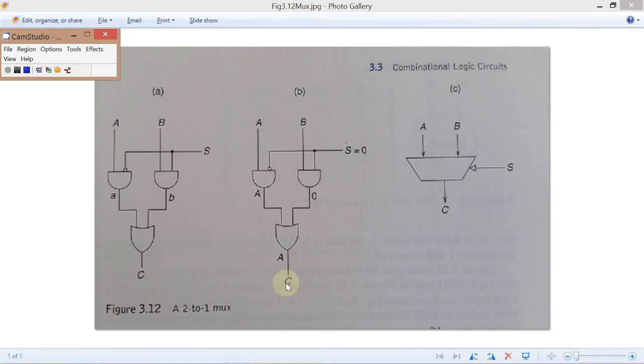The net result of all this is that if S equals 0, the output C matches the input A. On the other hand, if S equals 1, it is B that is ANDed with a 1, and A is ANDed with a 0 because of the P-type transistor, resulting in the output of the OR gate having the value of B.